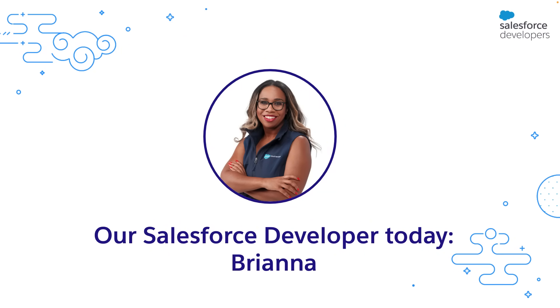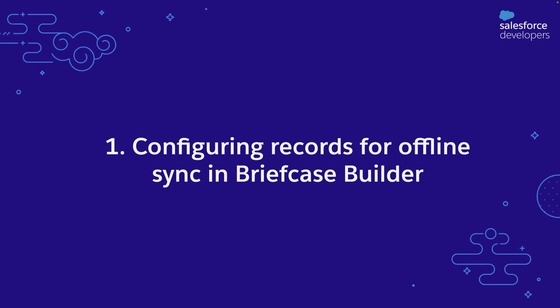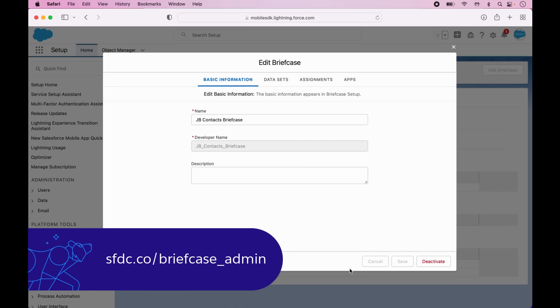We're going to start off by walking through the journey of Brianna. Brianna is a developer at Java Brains Incorporated. Her team is focused on building an app for her field sales team, which is looking to go to various events and build her contact clientele. To do this, Brianna logs in as an admin to her briefcase builder. She has an existing briefcase called JB Contacts Briefcase, designed for priming her offline use cases, which in this case is contacts.